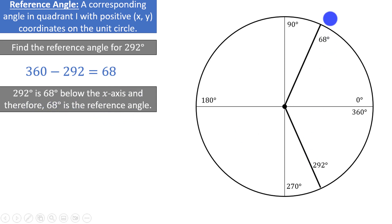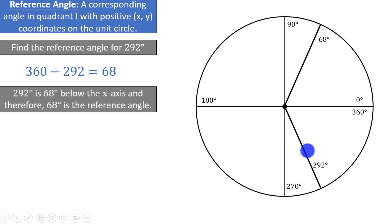That means that 68 degrees will have the same x and y-coordinates as 292 degrees, except the y-coordinate for 292 degrees would be negative, since we are below the x-axis.